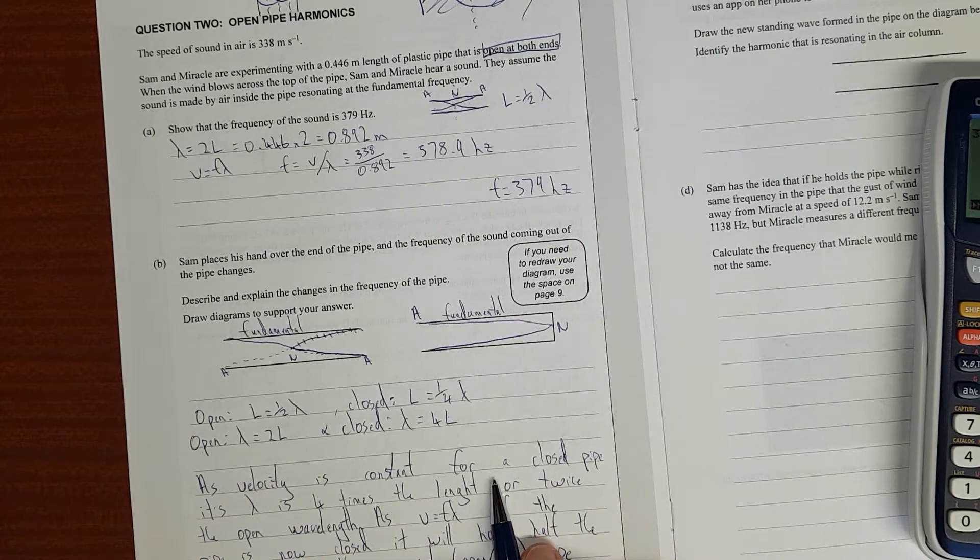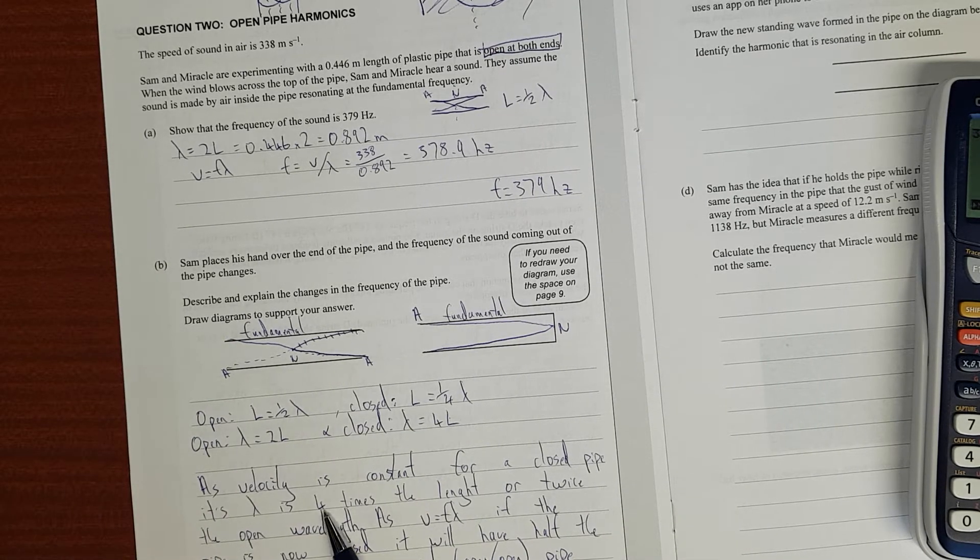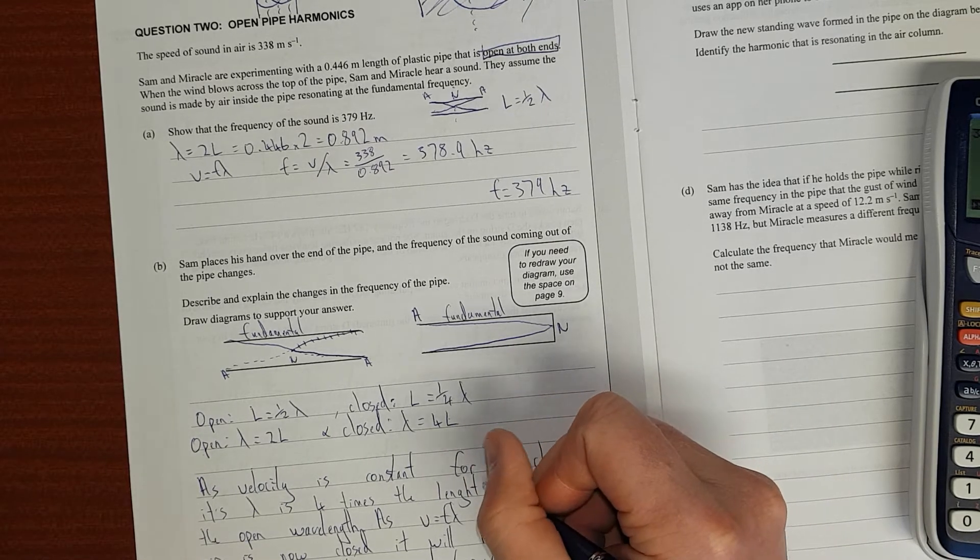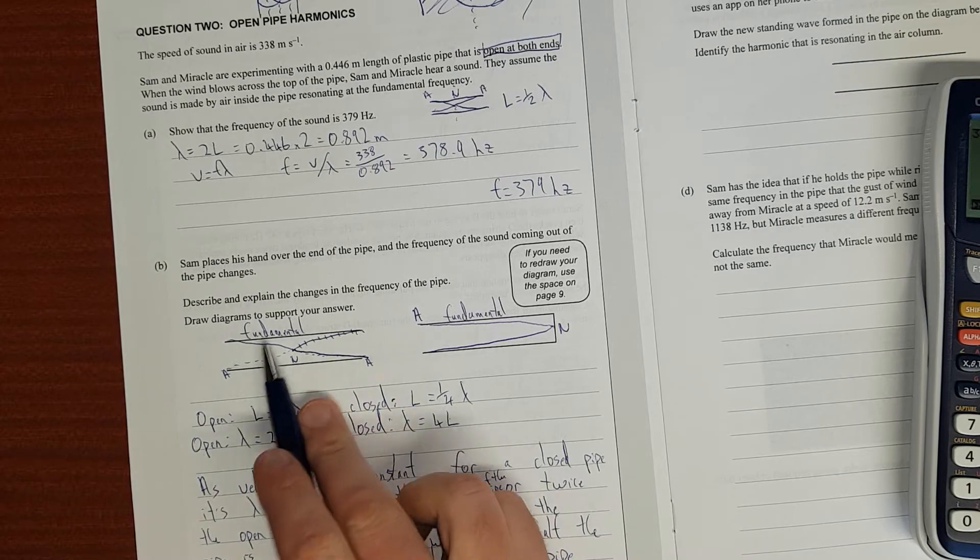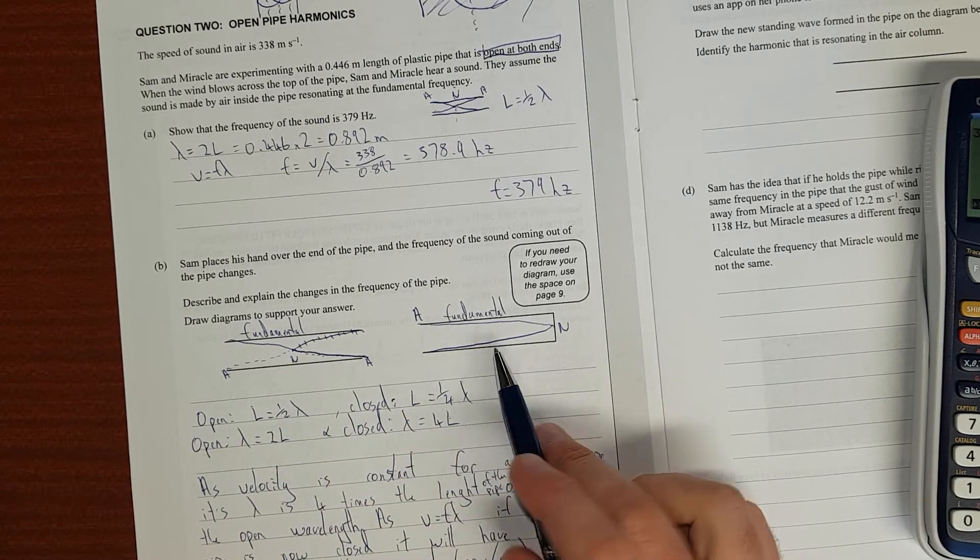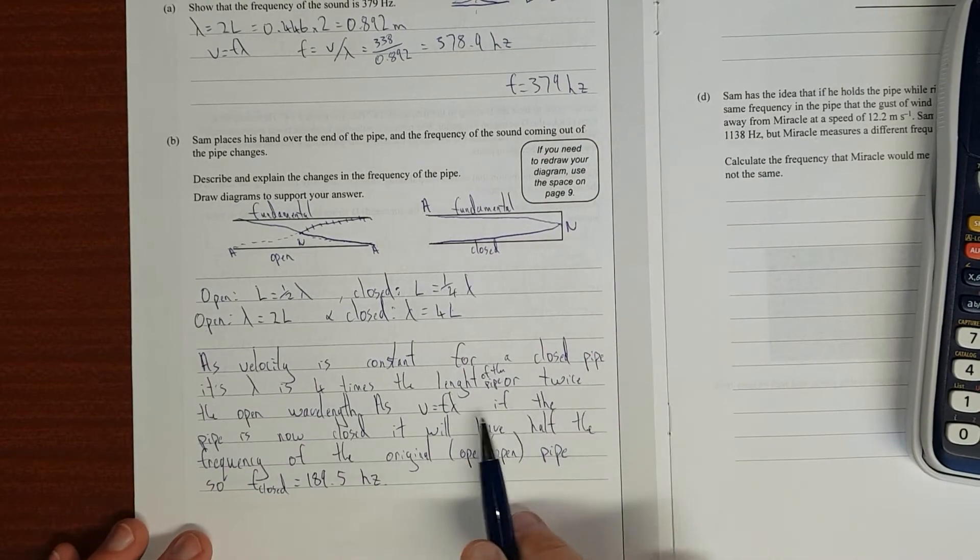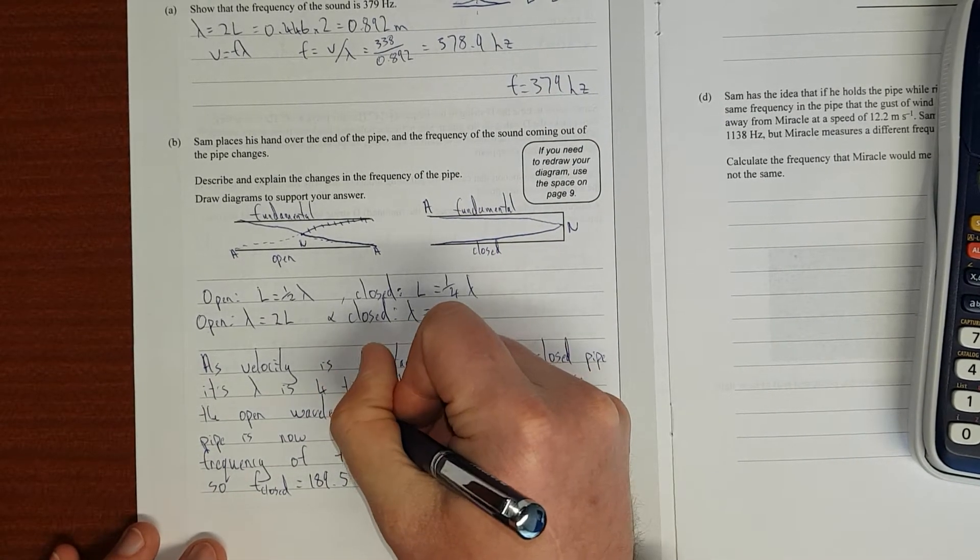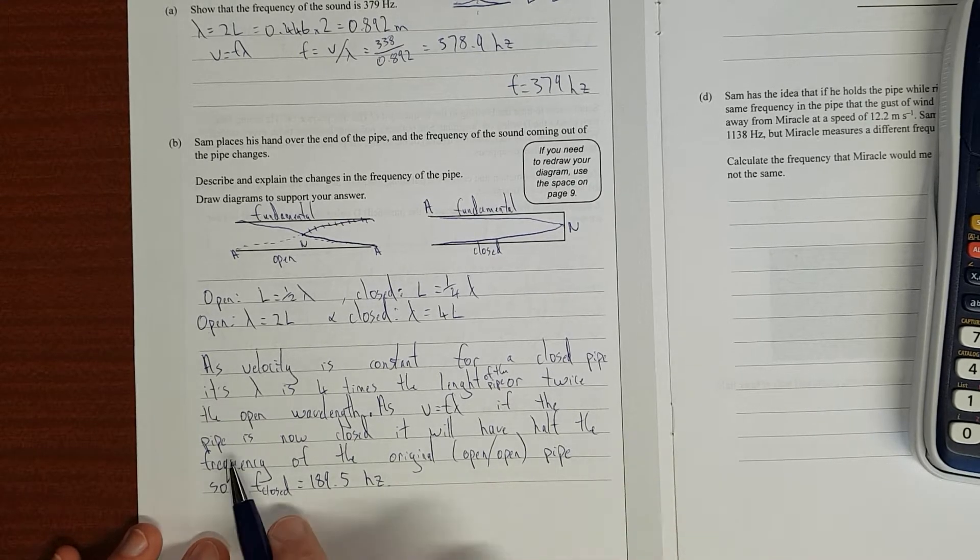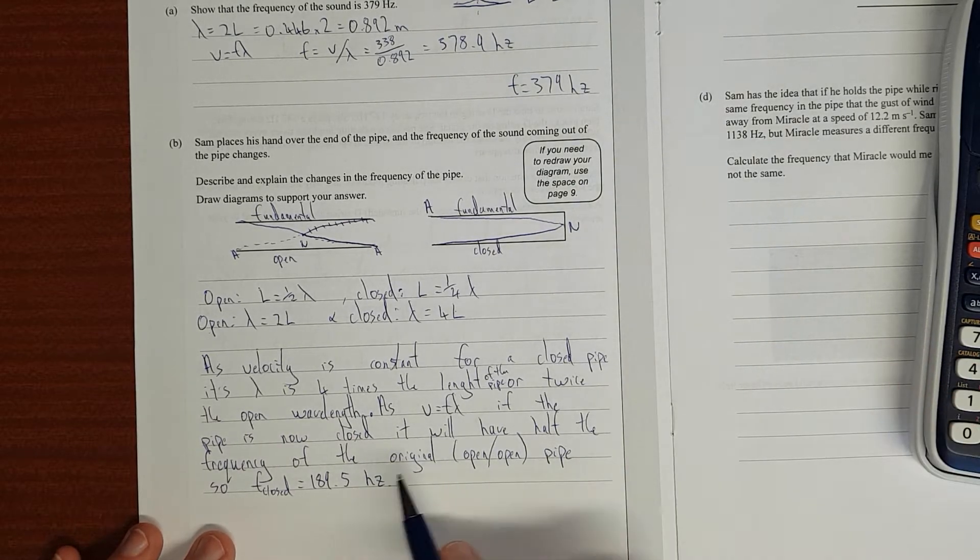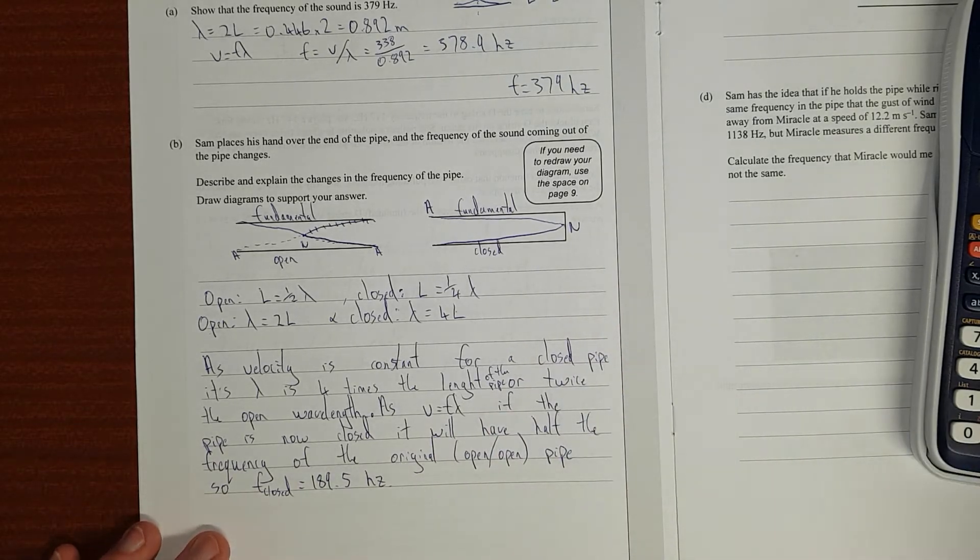I've just gone ahead and said as the velocity is constant for a closed pipe—you need to say the velocity is constant because it is for any sort of instrument as long as nothing else changes—its wavelength is 4 times the length of the pipe, or twice the open wavelength. I'll call this open, this is closed, just for brevity. As V equals F lambda, the wave equation, if the pipe is now closed it'll have half the frequency because the wavelength is doubled of the original open pipe. So F close, the frequency of the closed pipe, will be 189.5 hertz.